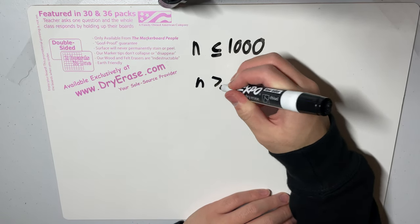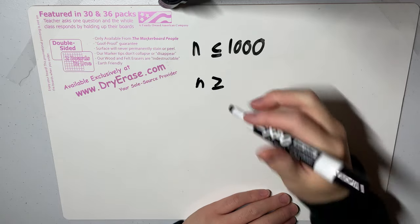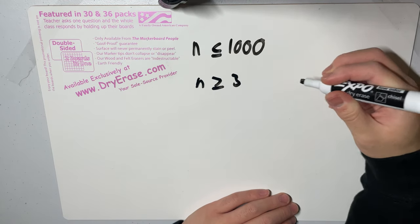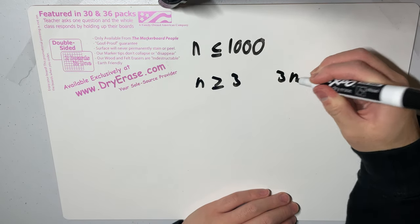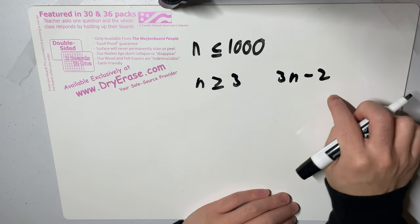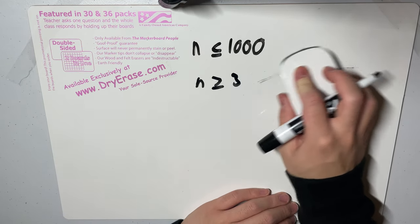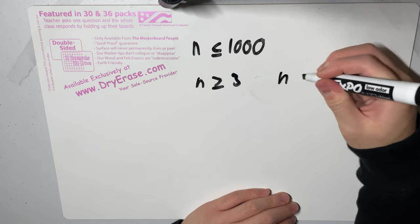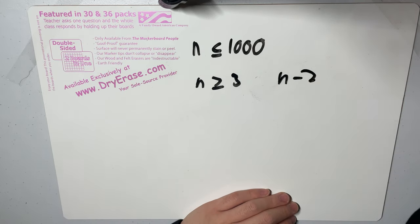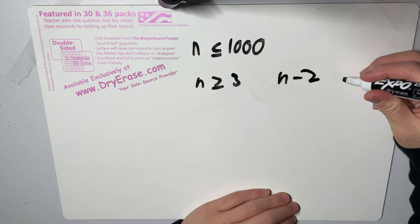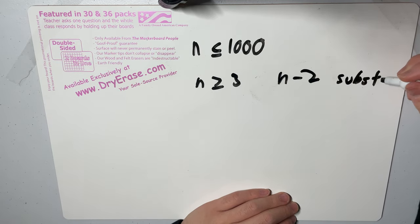If we assume n is greater than or equal to three, then there are n minus two substrings of length three.